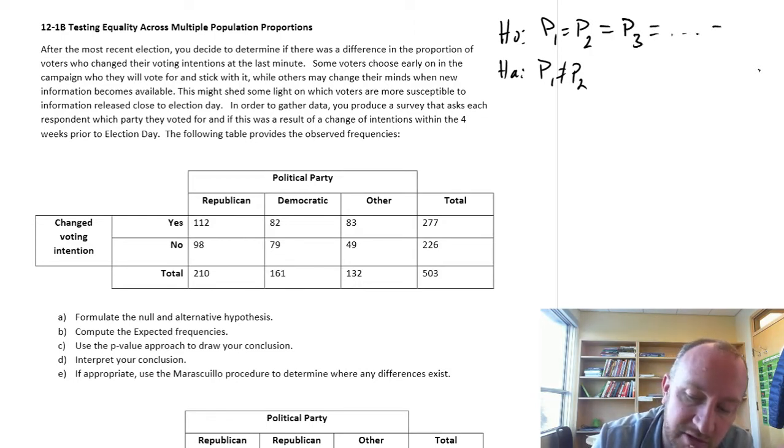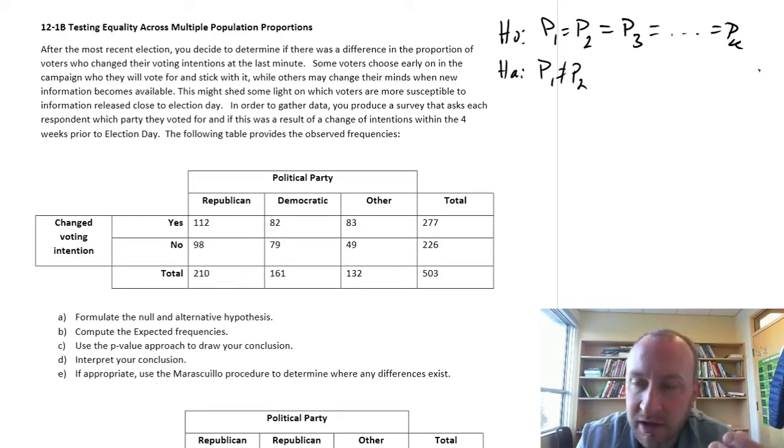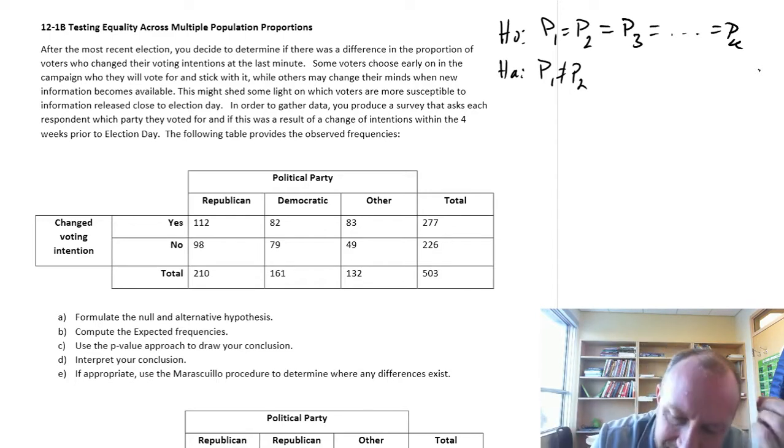Well now what we're going to be doing is looking at multiple population proportions. So this can be three or it can really be as many as we want and if that's the case, well now the alternative hypothesis, it's going to look a little bit different.